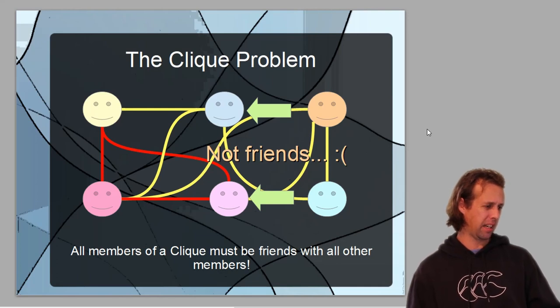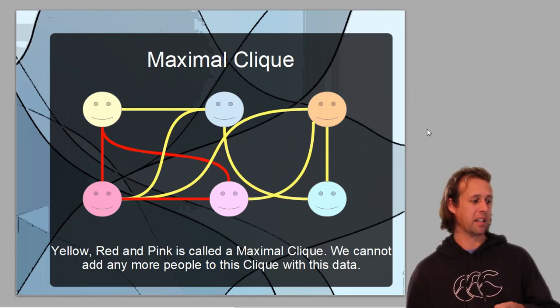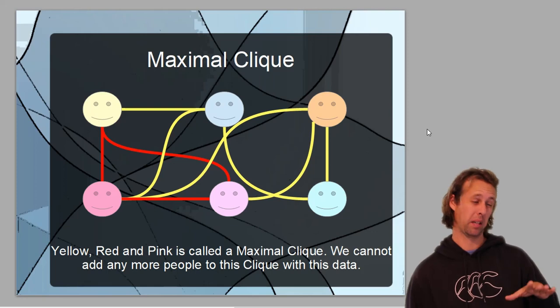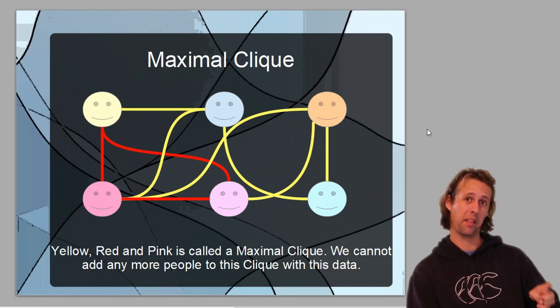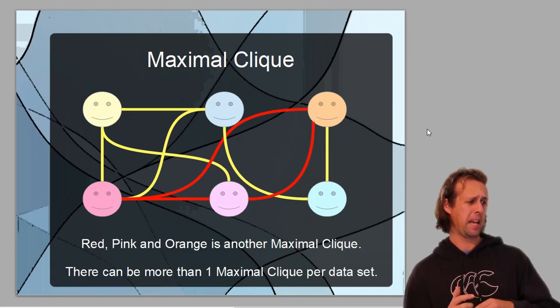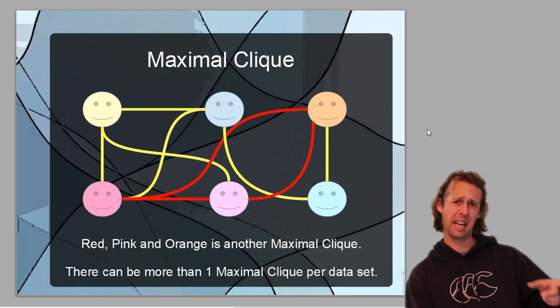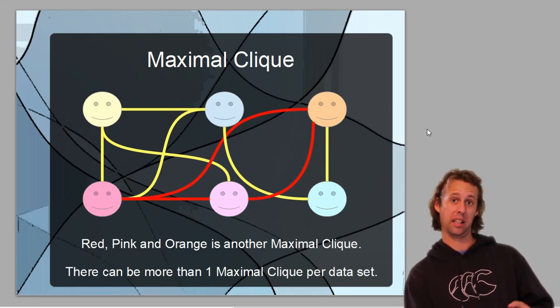You can see here that we can't actually add this blue person, since if we tried to add them, they're friends with yellow over there, but blue and pink are not friends. So we couldn't add orange either. In order to add a new member to a clique, the new member has to be friends with all of the other members of the clique. And so for this particular clique, this little clique of three, we can't actually add anybody else. So yellow, red, and pink is what's called a maximal clique.